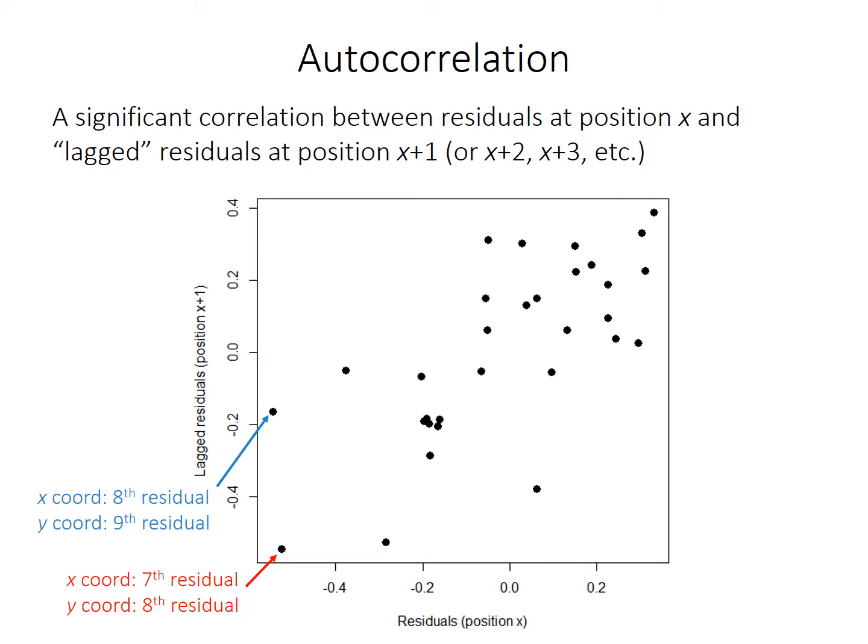That correlation between residuals is called autocorrelation. A scatter plot of the residuals at position x against the residuals at position x+1 suggests pretty strong autocorrelation among the residuals. Each point represents a residual as its x-coordinate paired with the residual of the next value as the y-coordinate — essentially the residuals plotted against the residuals lagged by one unit on the y-axis. It's also possible to lag by two, three, or more positions, and you can look at the correlation between actual residuals and the residuals shifted by various lag levels.